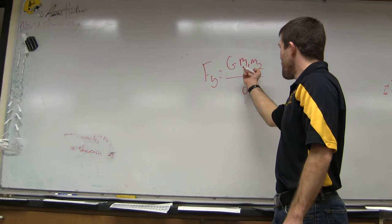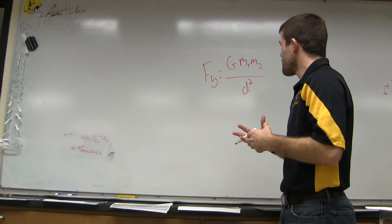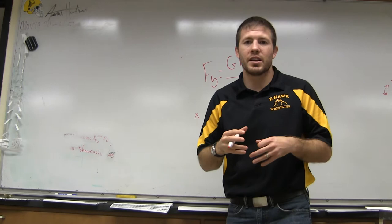So really if you take a look at this equation, what we're looking at is two masses that in some way, shape, or form interact with each other. And we know gravity is an attractive force, so if I've got a mass that's right here and another mass that's right here, they're attracted together.